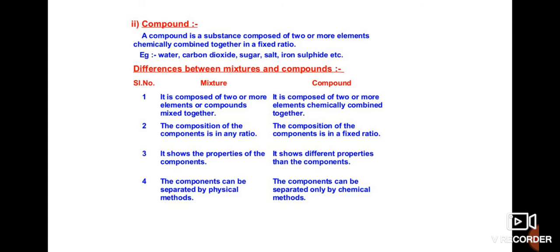Now let us come to compounds. A compound is a substance composed of two or more elements that are chemically combined together in a fixed ratio. When you combine elements in a fixed ratio, they form compounds. Very common examples are water, carbon dioxide, sugar, and salt.